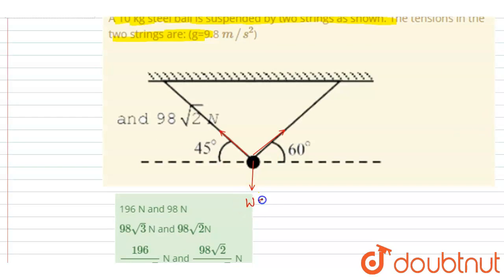So weight will be mg. m is 10, g is 9.8, so it will be 98 newton. Here this is T1, T2.